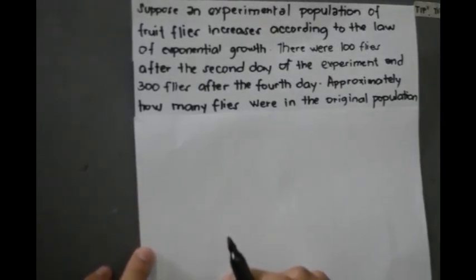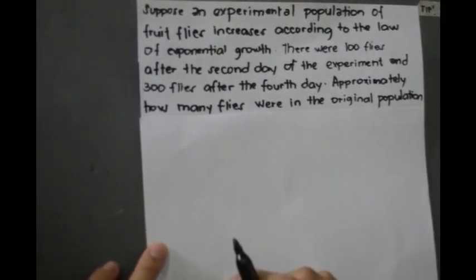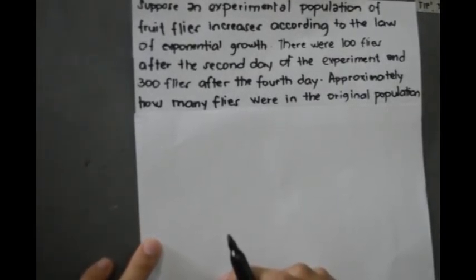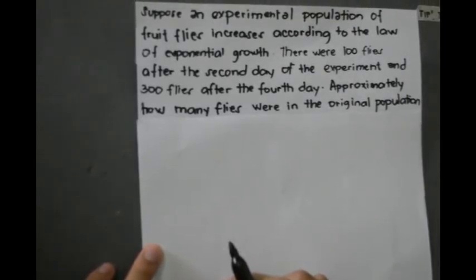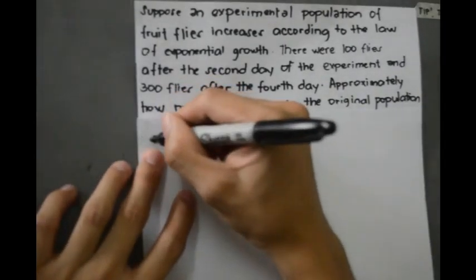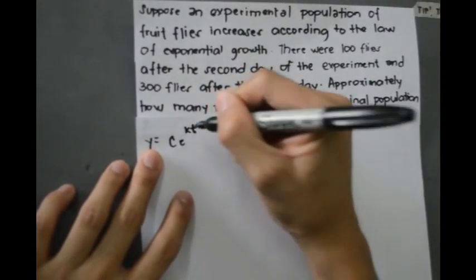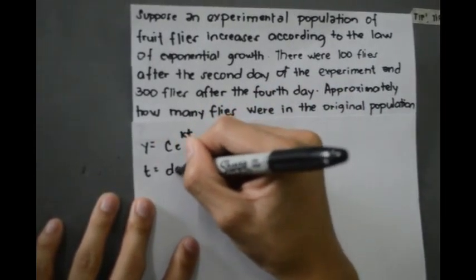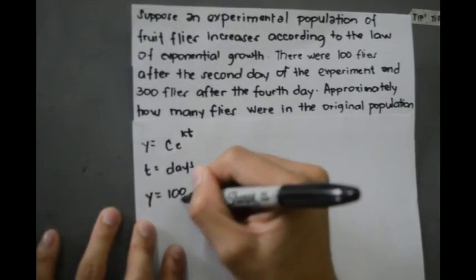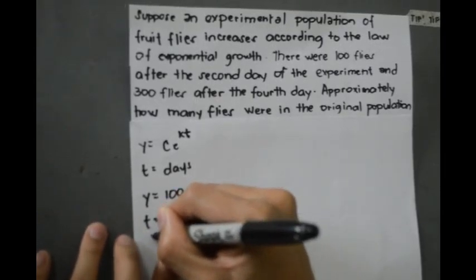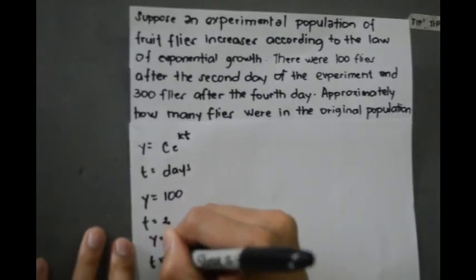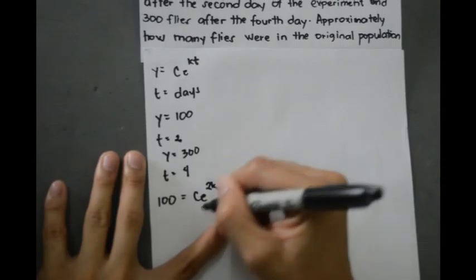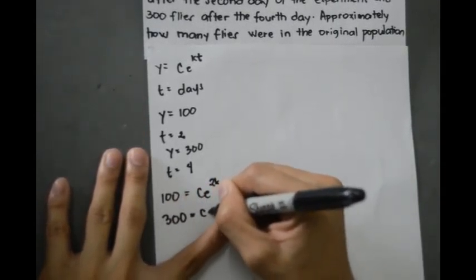Suppose an experimental population of fruit flies increases according to the law of exponential growth. There were 100 flies after the second day of the experiment and 300 flies after the fourth day. Approximately how many flies were in the original population? Let y equals c times e raised to kt be the number of flies at time t measured in days. We can write 100 equals c times e raised to 2k, and 300 equals c times e raised to 4k.